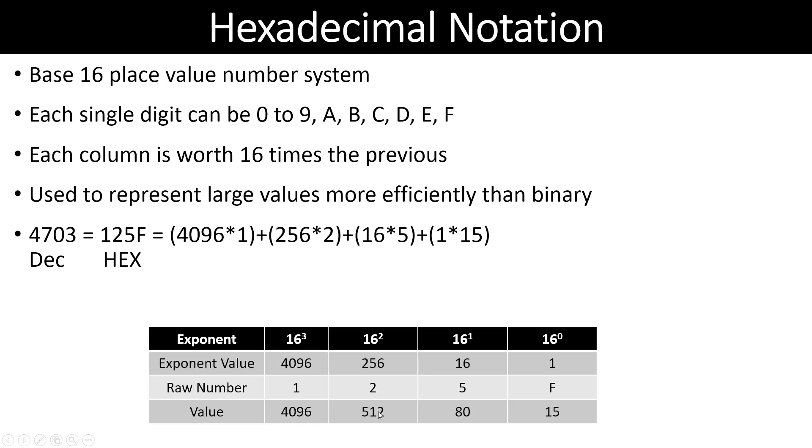In this case, we've got a decimal number of 4,703. The hexadecimal representation is 125F. Looking down here, we've got one 4,096, two 512s, five 16s, and 15 1's. When we add those together, we get 4,703.